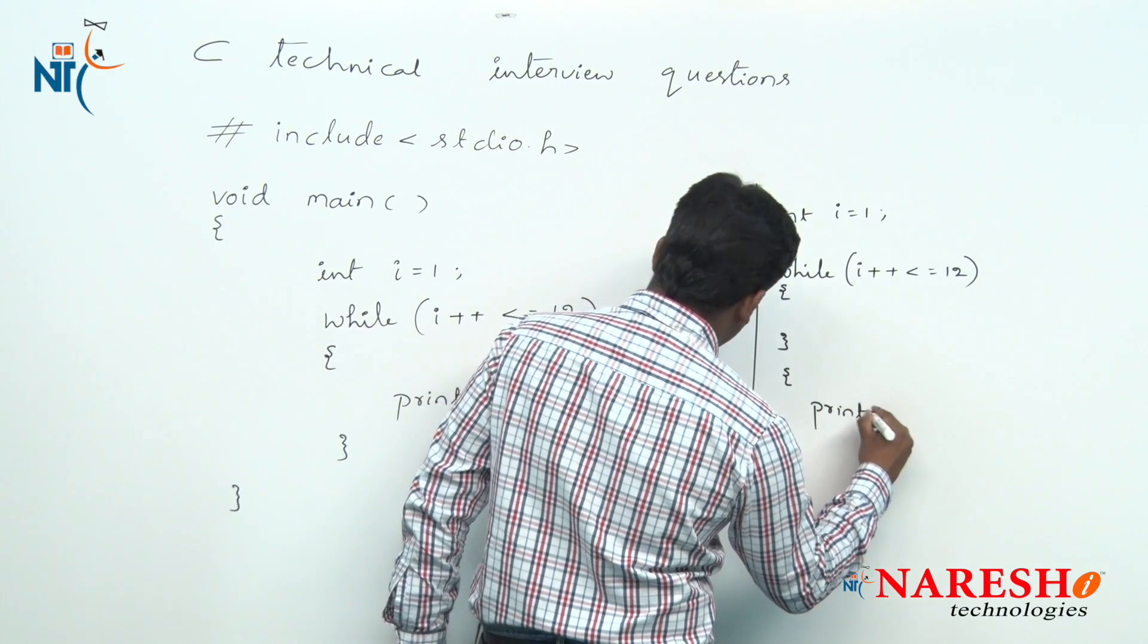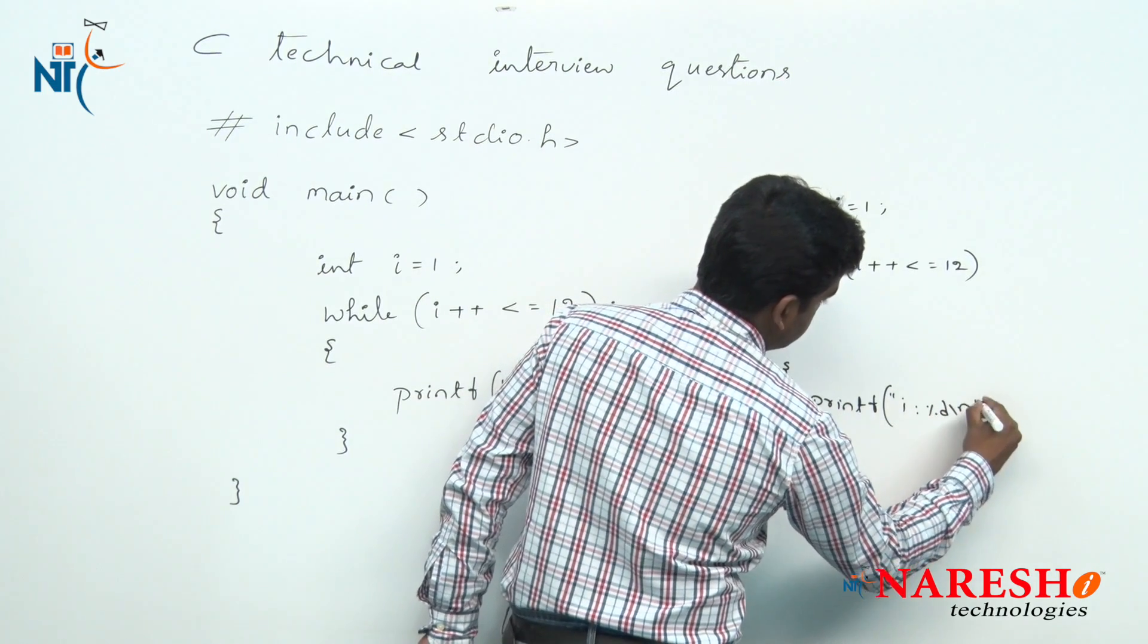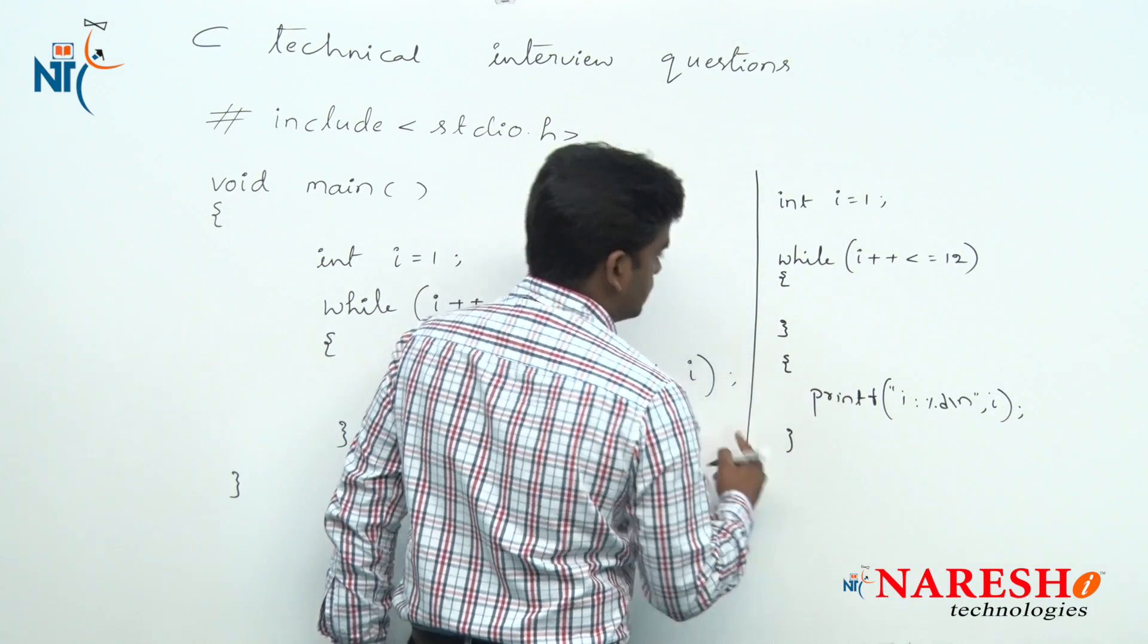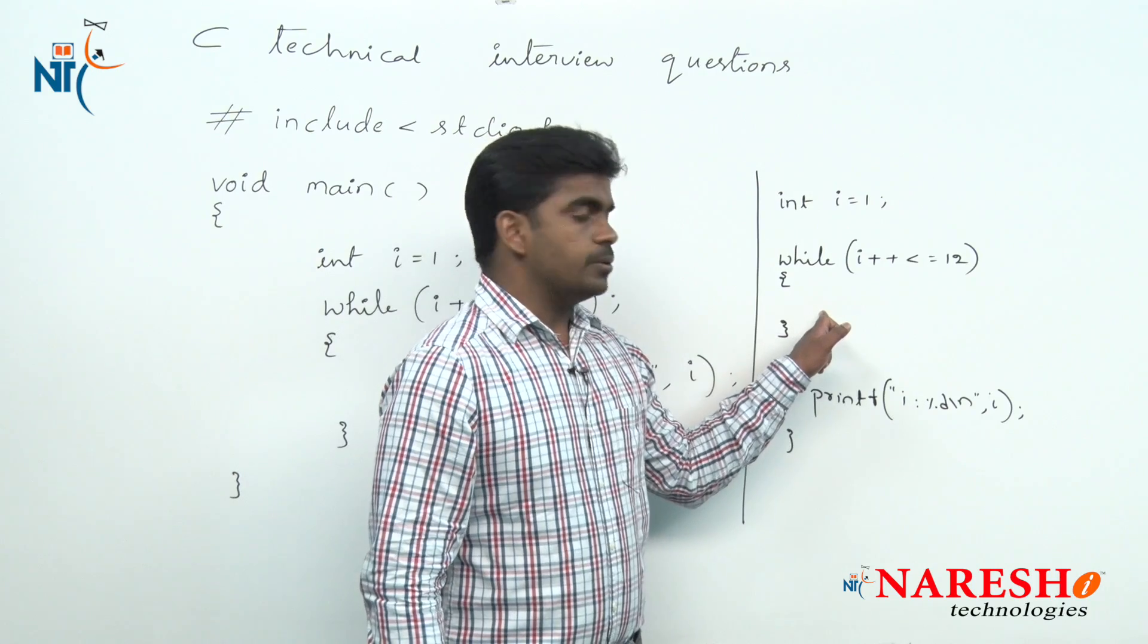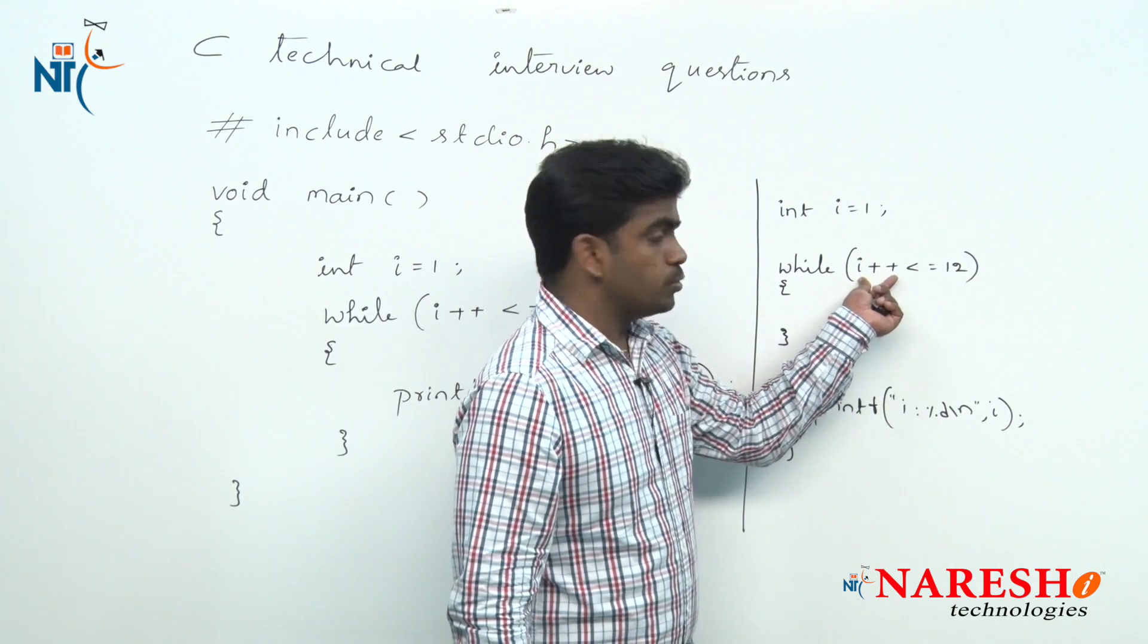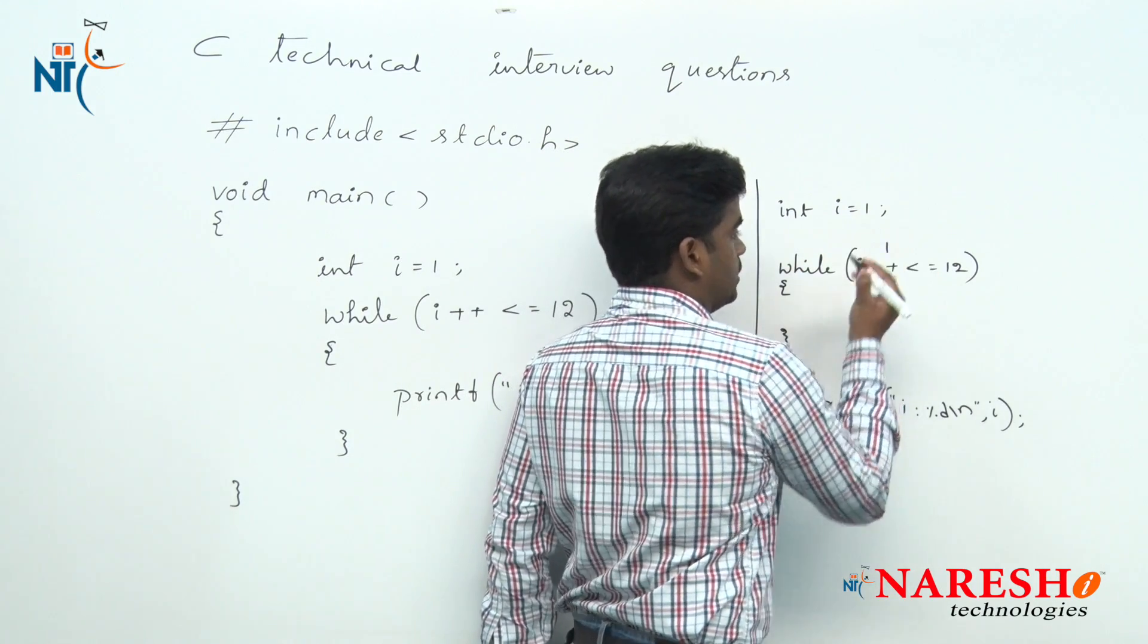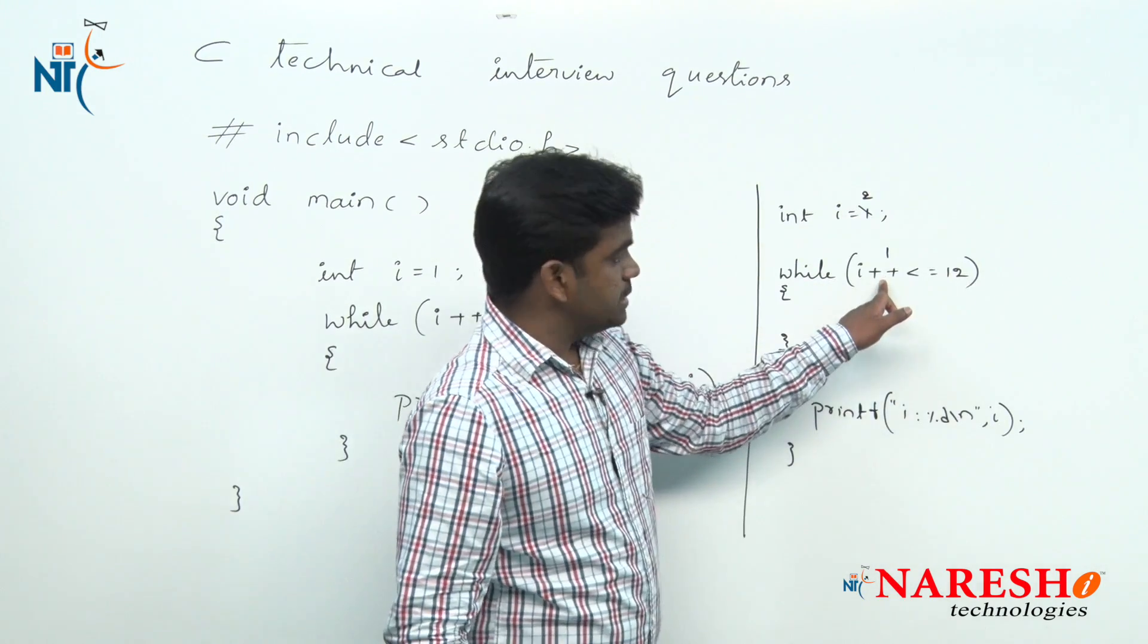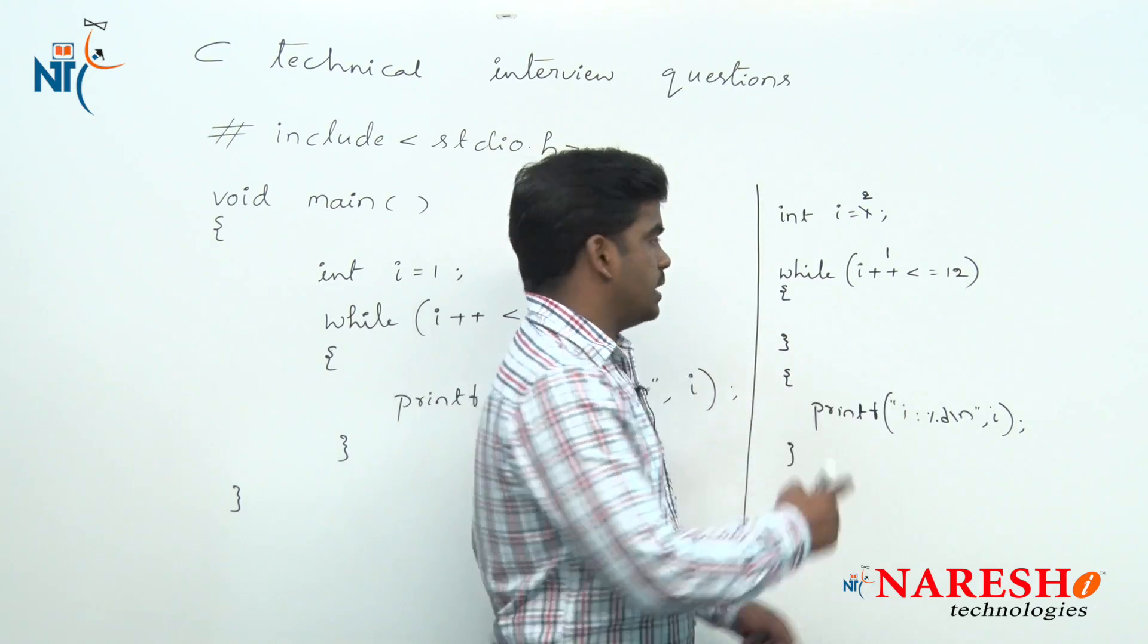Here we are printing printf i value percentage d that i we are printing. This is the program and how this program executes? See, for example, it is a post increment value.